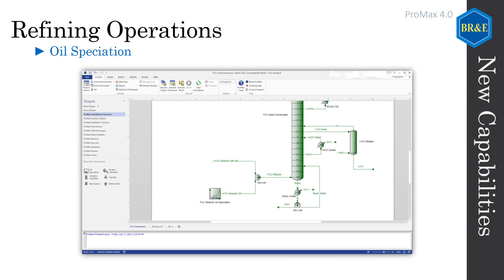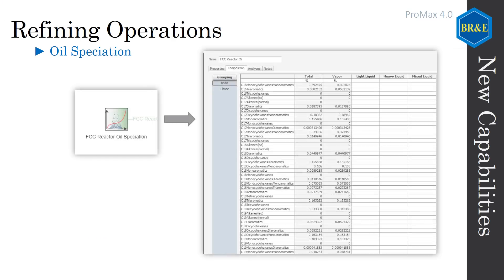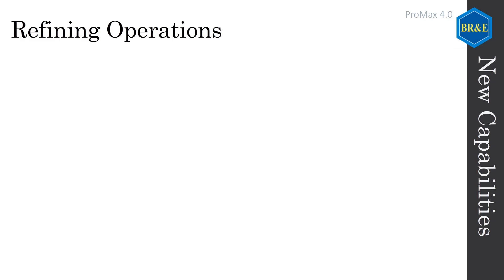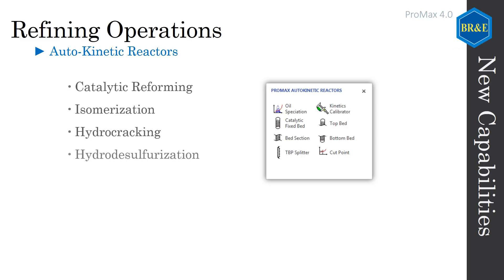We now offer a state-of-the-art oil speciation tool for characterizing your crude oils with pure and compound species. Catalytic reforming, isomerization, and hydrocracking reactors can now be modeled in PROMAX.